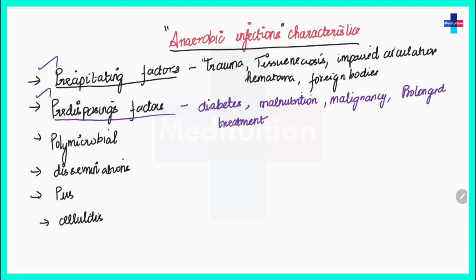Usually these infections are polymicrobial — more than one anaerobe is responsible. In most clinical cases you can see aerobic bacteria along with more than one anaerobe involved in the infection. That is why these are called polymicrobial infections.